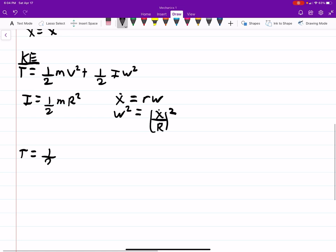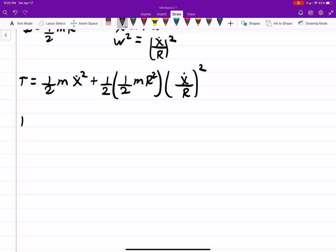And then we can plug that in for our kinetic energy. So we have T is equal to one-half m x dot squared. This is our linear velocity. Plus one-half I, which is one-half mr squared, times omega squared, which is x dot over r squared.